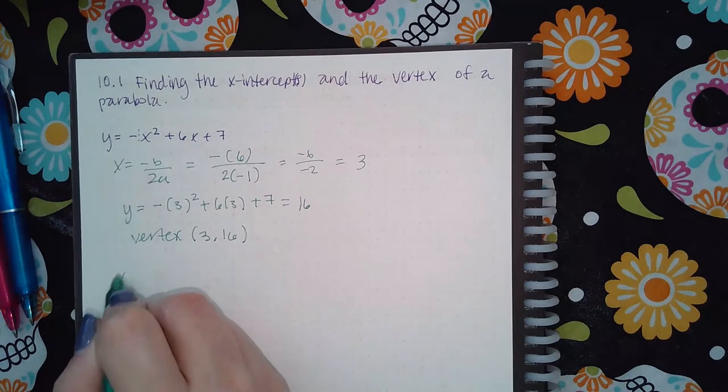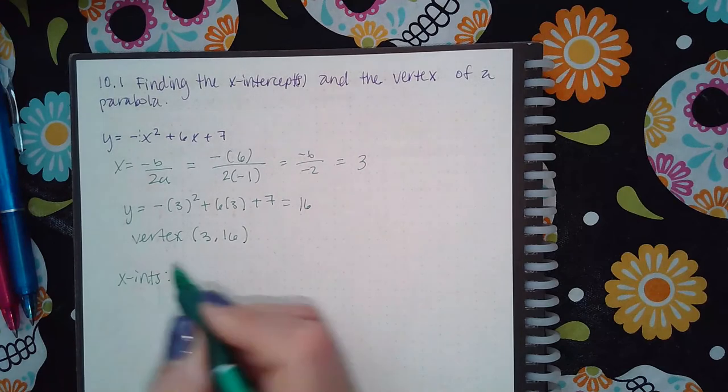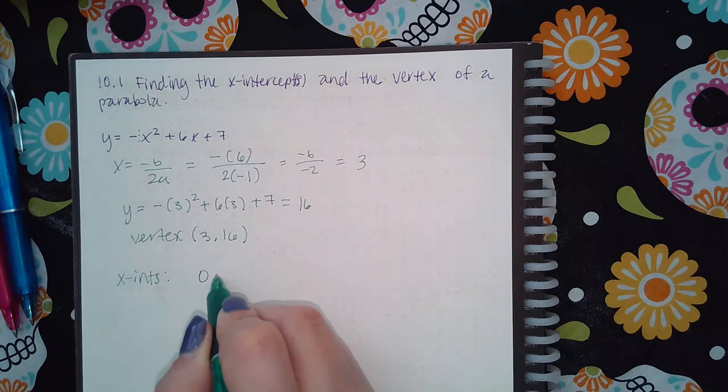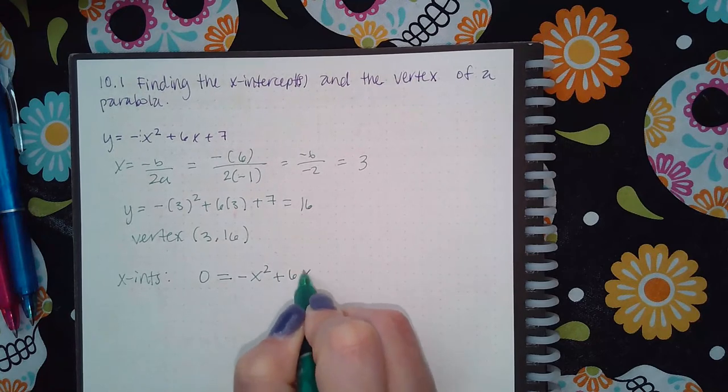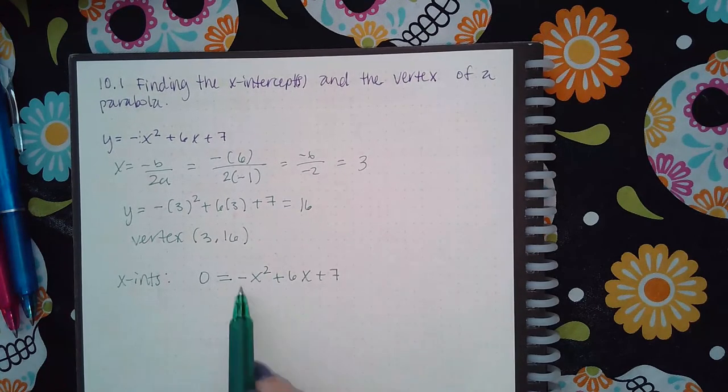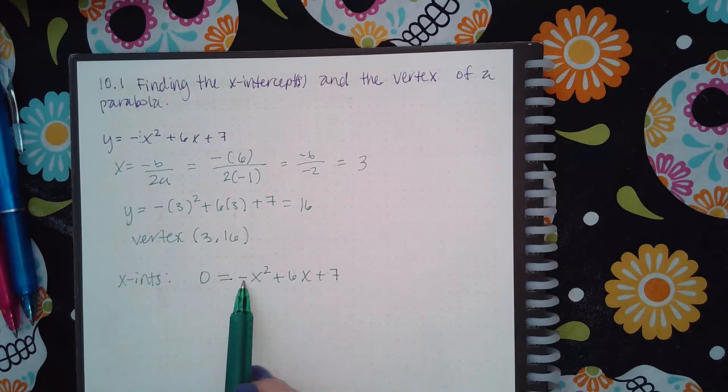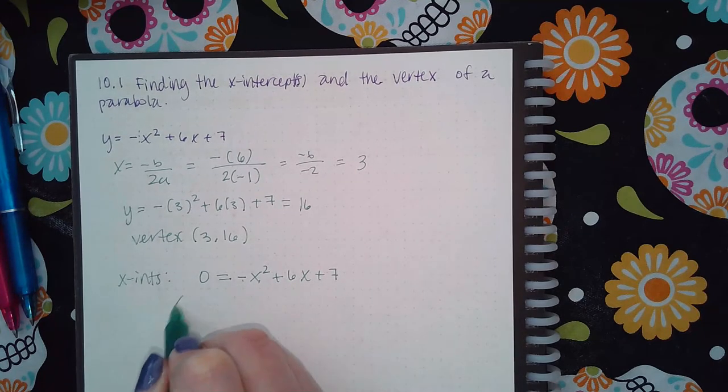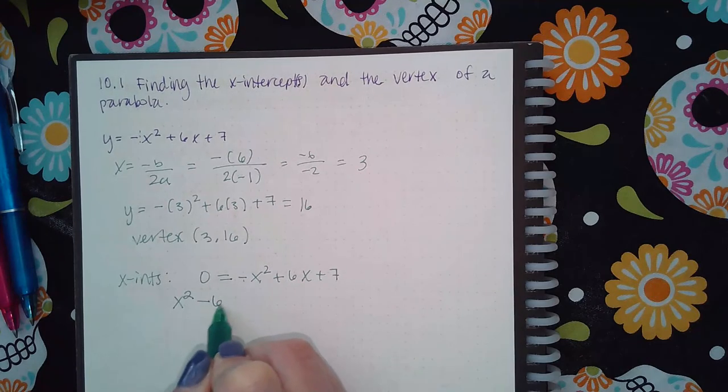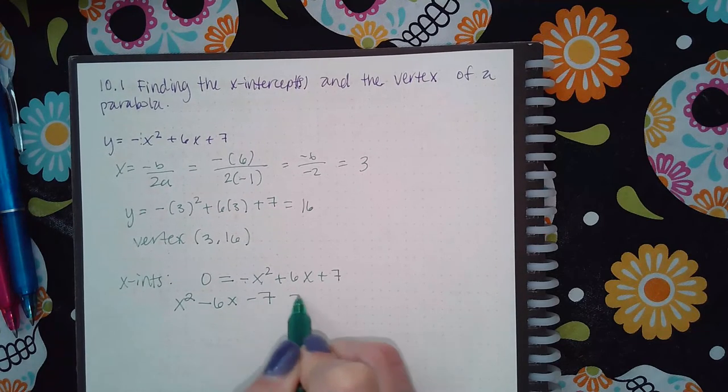Now the x-intercepts occur when the y value is 0. So you're going to take the y value and make it 0 and then try to solve this equation. Now I don't like when my a is negative, so I'm going to move all three of these over to the right. So I get positive x squared, negative 6x, negative 7, equal to 0.